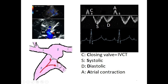Conditions causing a prominent A wave include tricuspid stenosis, right ventricular hypertrophy, and pulmonary hypertension. In all these cases, right ventricular compliance is decreased, so pressure inside the right atrium during atrial contraction rises higher. As a result, blood is pushed more forcefully backward into the hepatic vein and the A wave becomes prominent.